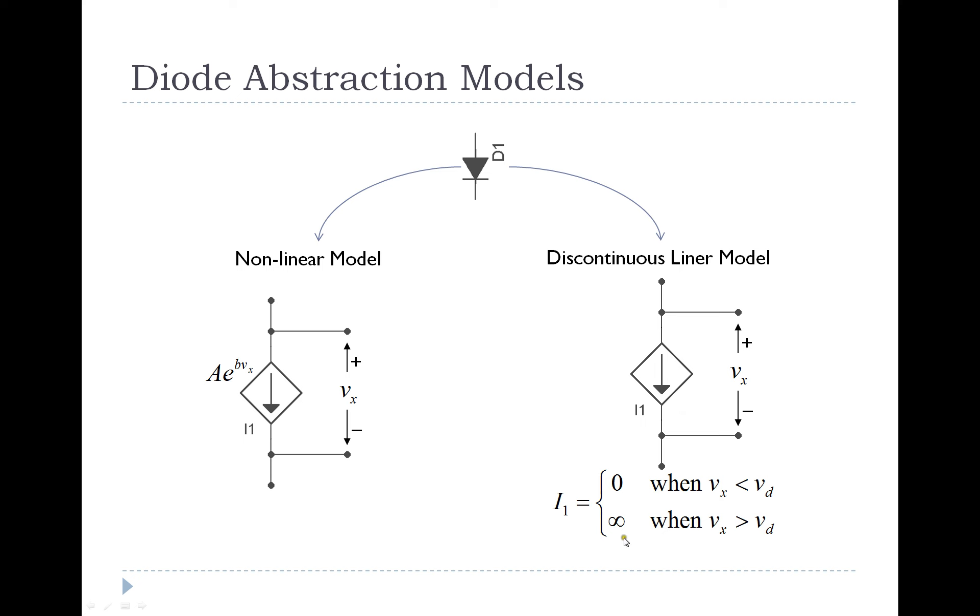In other words, it's going to allow an infinite amount of current to pass through it. And that doesn't mean that an infinite amount of current does pass through it, it just means that the resistance between the two points here is essentially zero when the voltage across these two points exceeds the diode voltage Vd. And when it does not exceed the diode voltage, there's no current, so it acts like an open circuit.